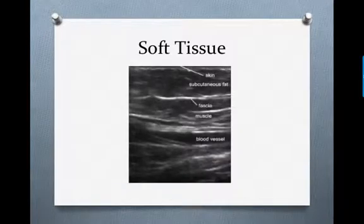This is an example of normal soft tissue on ultrasound. You can see skin, followed by subcutaneous fat, fascia, muscle. Blood vessels may or may not be seen, and bone would appear bright white and would be at the bottom of the image.